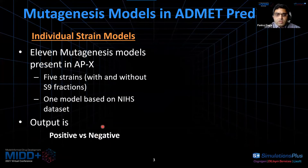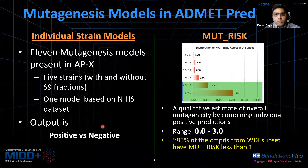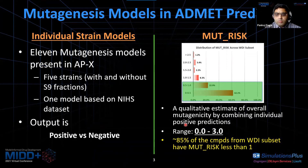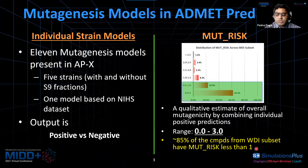We also have another consolidated model, which we call MuteRisk. This is a qualitative estimate of overall mutagenicity, where we combine all the individual positive predictions with different weights. The range for MuteRisk is zero to three. Around 85% of the compounds from the World Drug Index have been predicted to have a MuteRisk less than one, which is our threshold for calling the compound mutagenic or non-mutagenic.